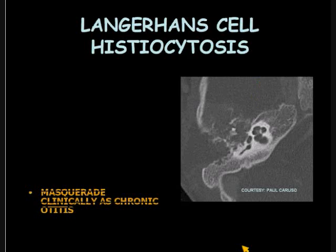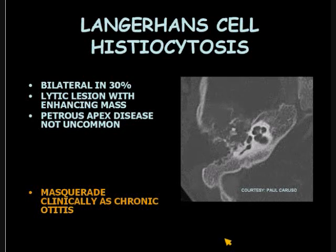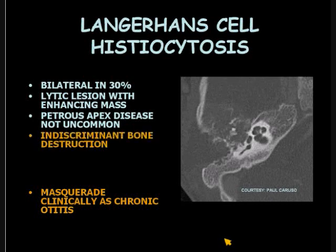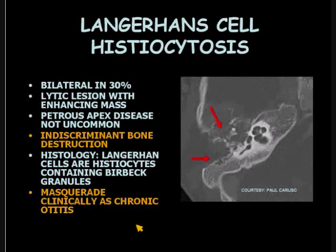Langerhans cell histiocytosis also masquerades clinically as chronic otitis. This entity is bilateral in 30%. Often there is a lytic lesion with an enhancing mass. Petrous apex disease is not uncommon with LCH. They are also characterized by indiscriminate bone destruction, which would be atypical for cholesteatoma. The histology is the Langerhans cell, which are histiocytes containing Birbeck granules.